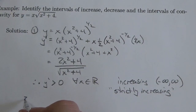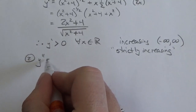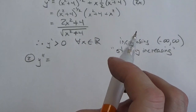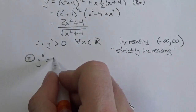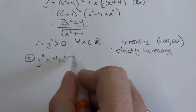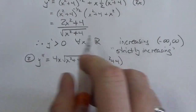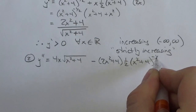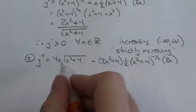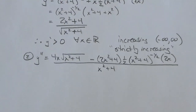Now let's take the second derivative to investigate concavity. Starting from f'(x) = (2x² + 4) / √(x² + 4), we apply the quotient rule: the derivative of the numerator is 4x, multiplied by √(x² + 4), minus the numerator (2x² + 4) times (1/2)(x² + 4)^(-1/2) times 2x by the chain rule, all over x² + 4 — squaring the denominator removes the radical.